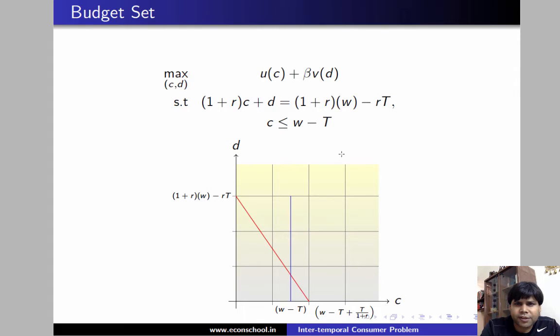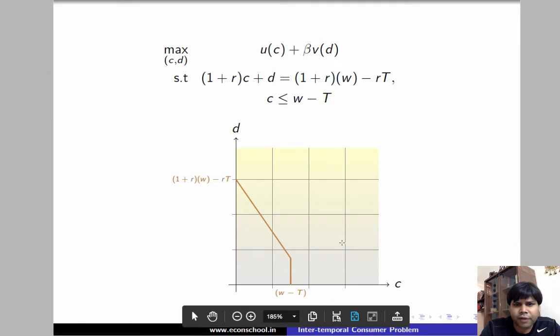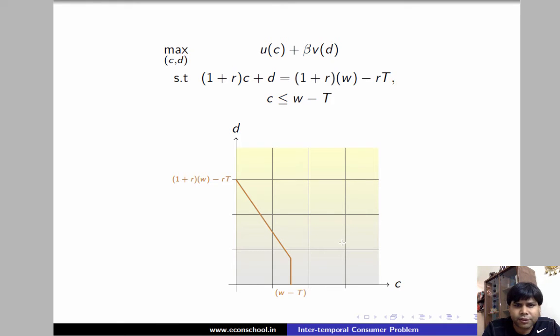Now C is less than or equal to W minus T. So that simply means that this portion is not applicable. This portion of the line is not applicable. So what we are going to do is we are going to remove this. And we are going to get finally this as our budget constraint.